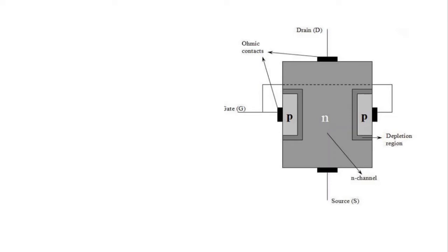Assalamu alaikum, welcome to Technically Explained. In the previous video we discussed the construction of the junction field effect transistor. We said that the major portion of the structure is the n-type material, and the drain and source terminals are connected to this n-type material. We also said that the two p-type materials are connected together and connected to the gate terminal. We have two p-n junctions and because of those two p-n junctions we have two depletion regions.